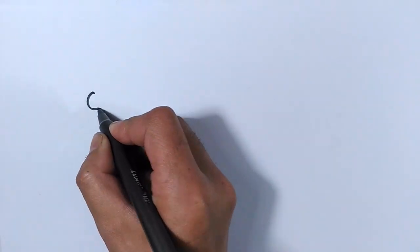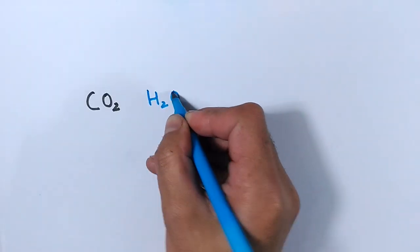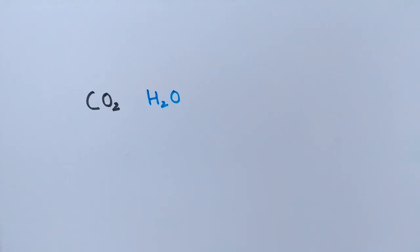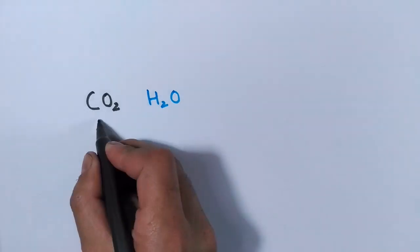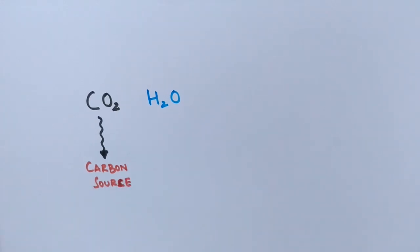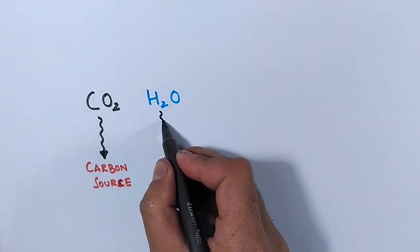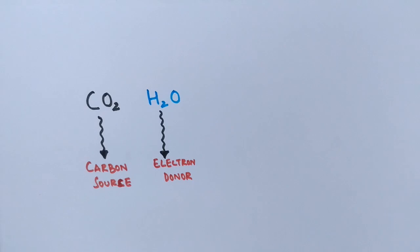What are the reactants — the ingredients needed for photosynthesis to occur in plants? First, the primary molecule needed is carbon dioxide, which plants obtain from the atmosphere. The second important molecule is water, H2O. Carbon dioxide acts as a source of carbon, while water serves as the final electron donor in this reaction.